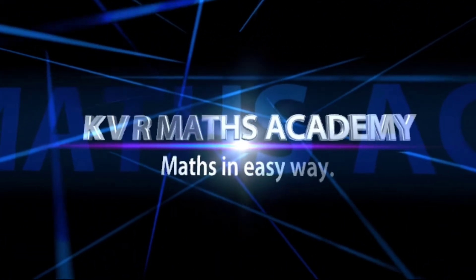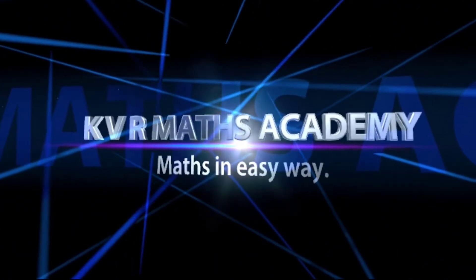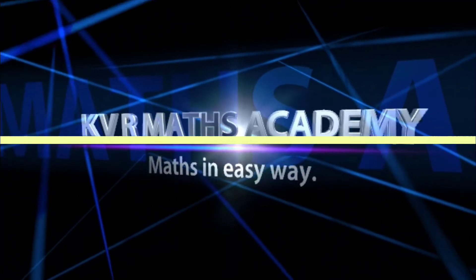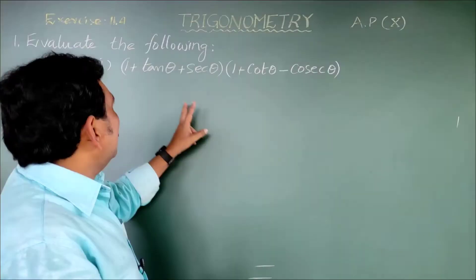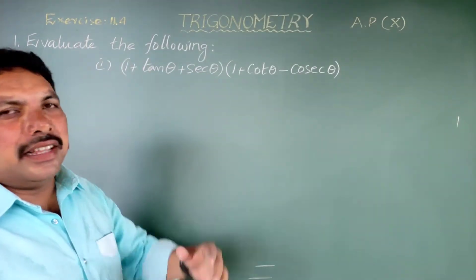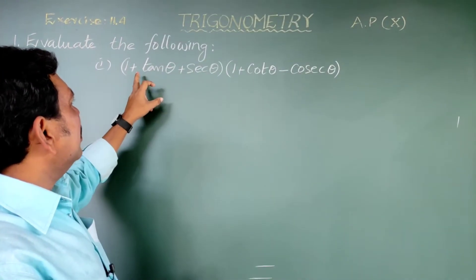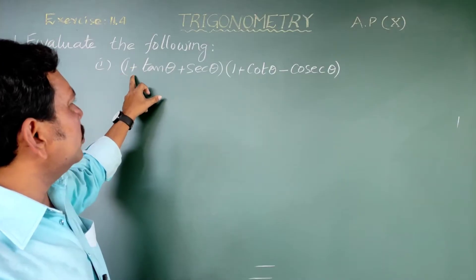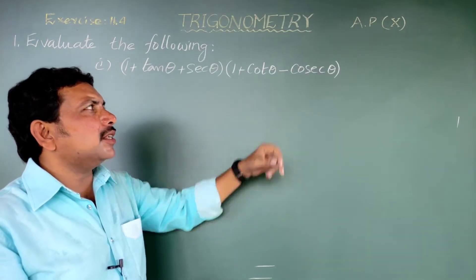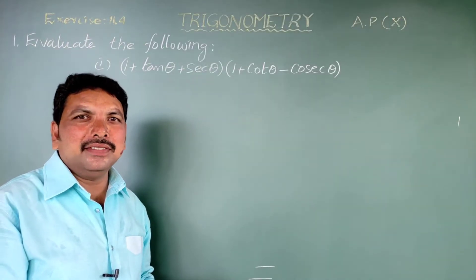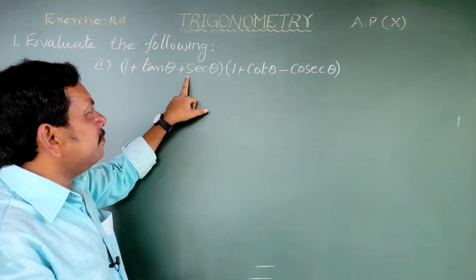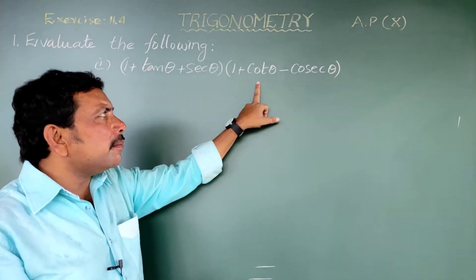KVR Maths Academy - maths in easy way. First question in Exercise 11.4: evaluate the following. First question: one plus tan theta plus secant theta, into one plus cot theta minus cosecant theta.